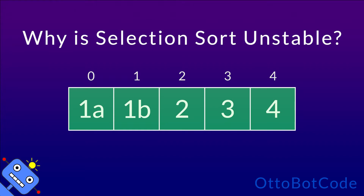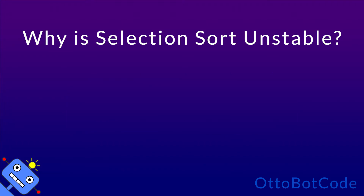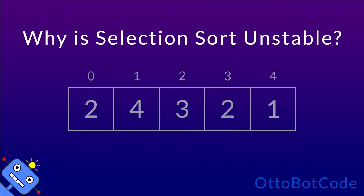This might make you think that selection sort is stable, but that's wrong. Consider this array, which contains the element 2 twice. Like before, we label them 2a and 2b.